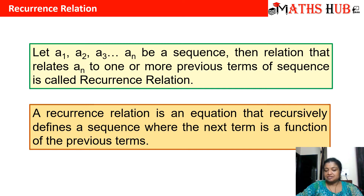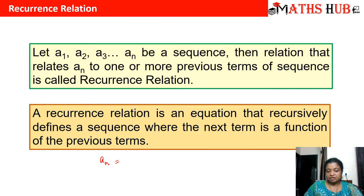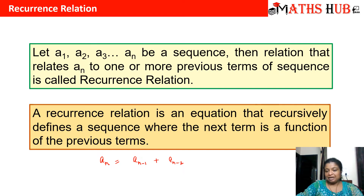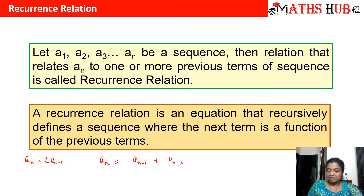In other words, a recurrence relation is an equation that recursively defines a sequence, where the next term is a function of the previous term. For example, if the nth term of the sequence is the sum of the previous two terms, we are linking terms of the sequence with previous terms. These are called recurrence relations because they recursively depend upon previous terms. The nth term may depend on one term or two terms.